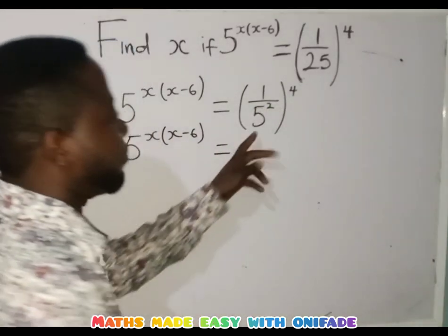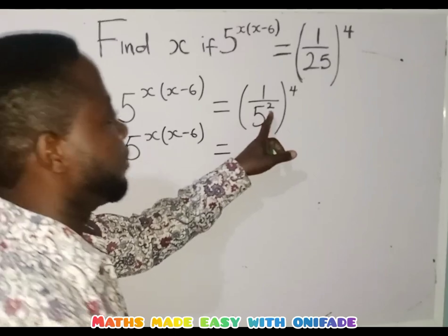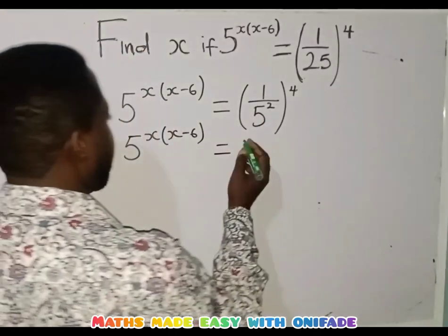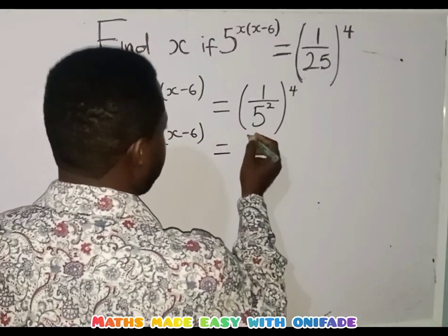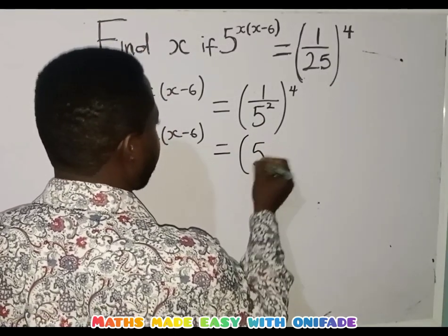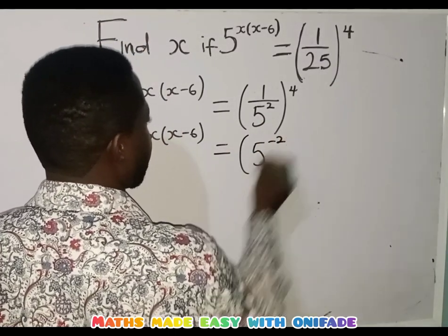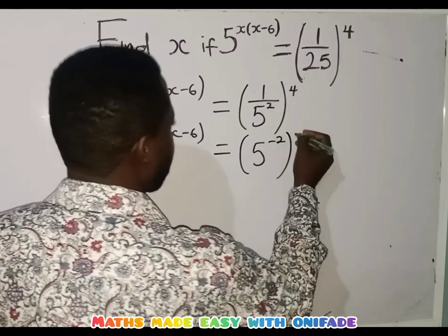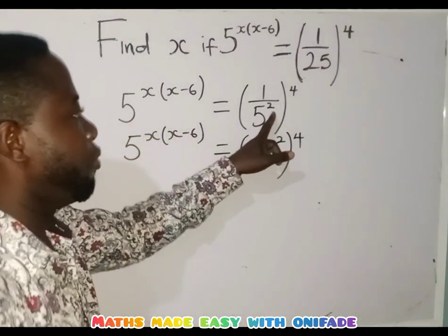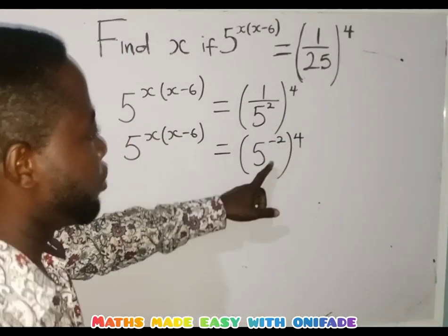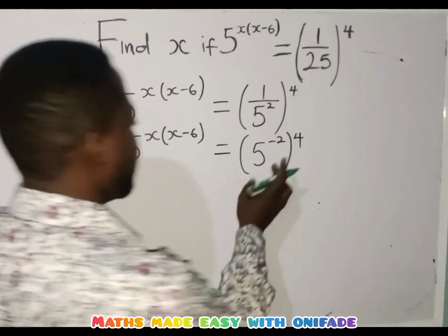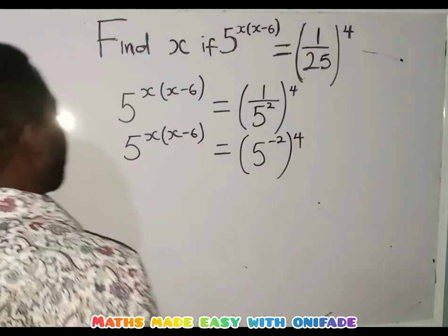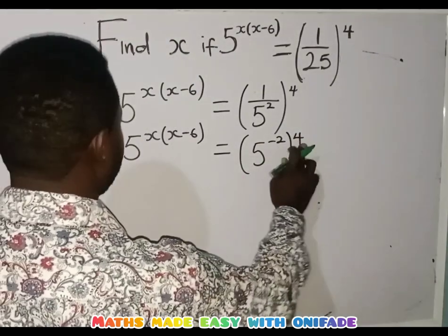Now 1 over 5 raised to the power 2 in indices simply means 5 raised to the power minus 2. So we are changing this 1 over 5 raised to the power 2 to an index 4 and it has changed to 5 raised to the power minus 2.